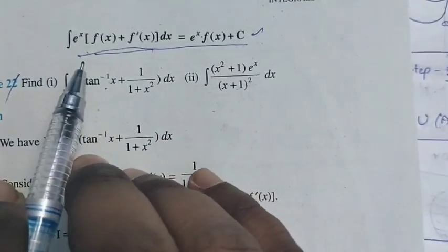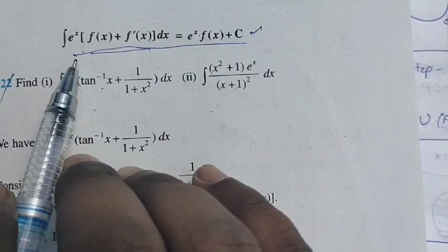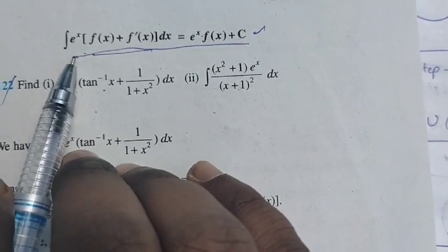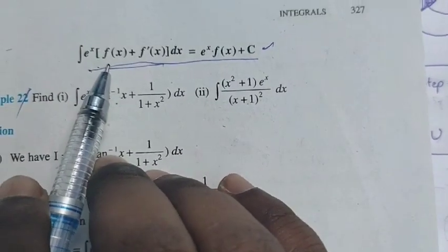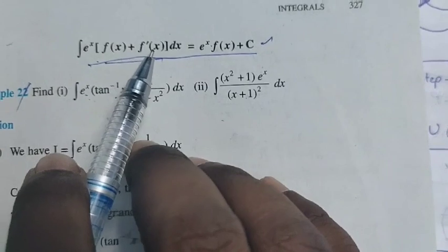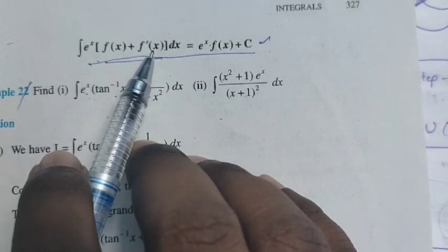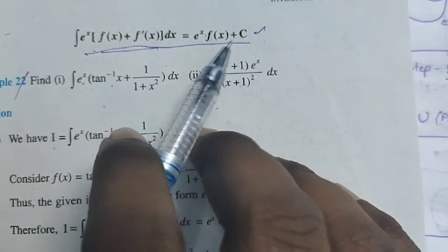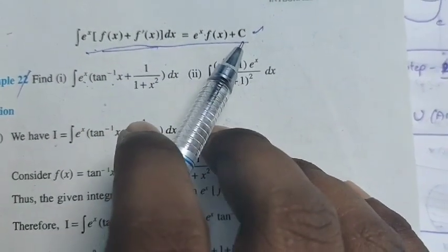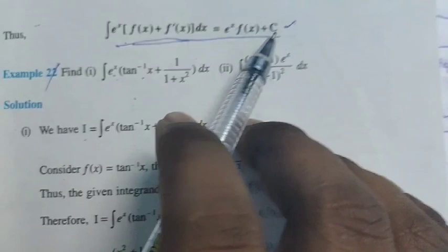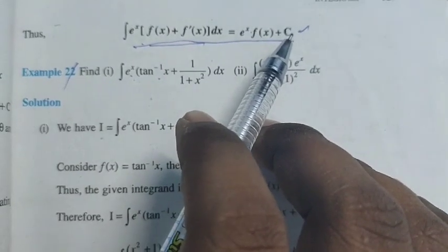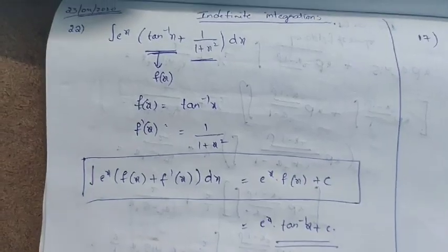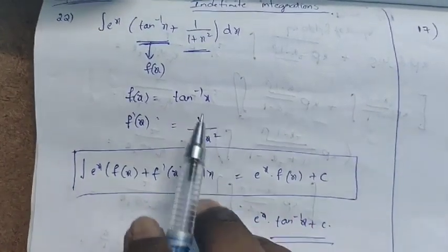Let me explain: if the given question is in the form of e^x · [f(x) + f'(x)], the result is e^x · f(x) + constant. I will teach you one problem now. Come on, here is a problem for you.